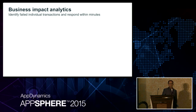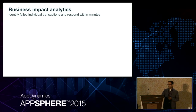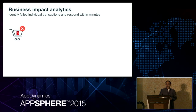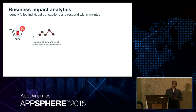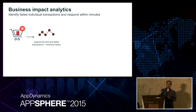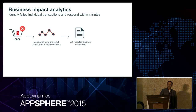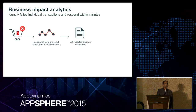Business impact analytics is about identifying failed individual transactions and responding within minutes. If you have APM agents, they're already collecting all the performance data. With the analytics product, using those same agents, you can now capture all the slow and failed transactions and tie business data to them. With analytics you take all transactions, capture information about them, tie the business part, and in real time slice and dice the data — by customer, by geography, or by anyone who had more than $100 in their shopping cart.